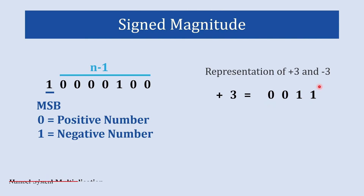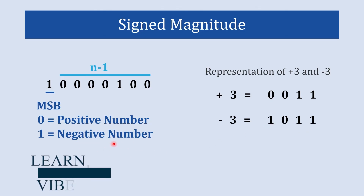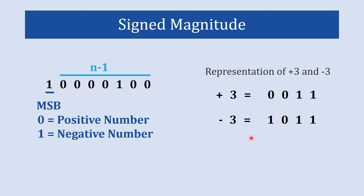If the number is written as 1 0 1 1, the MSB is 1 which indicates a negative number, and 0 1 1 represents 3 — so it is minus 3. In this method we also encounter the problem of dual zero representation. So among these three methods, 2's complement is preferred.